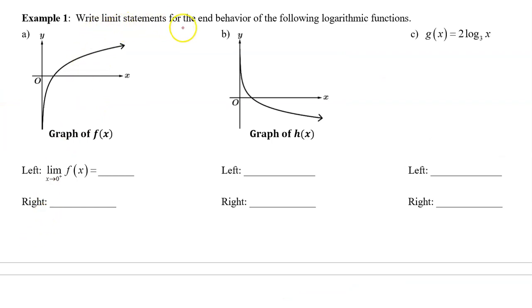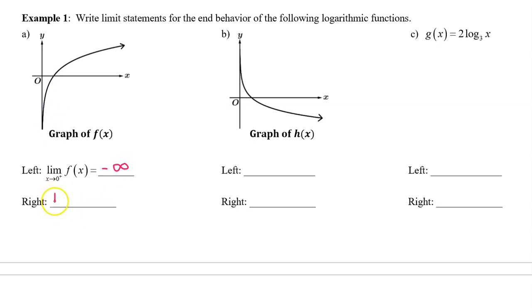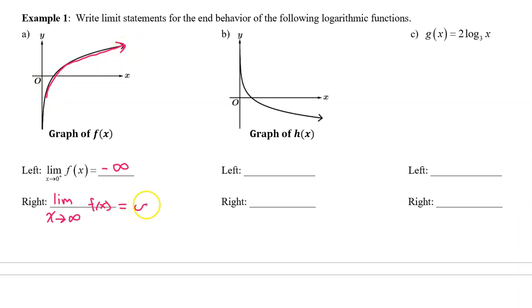Example 1: Write limit statements for the end behavior for the following logarithmic functions. Part A: For the left-end behavior, say the limit as x approaches zero from the right of f of x. As x approaches zero from the right, f of x approaches negative infinity. For the right-end behavior, begin the limit as x approaches positive infinity of f of x. As x approaches positive infinity, f of x also approaches positive infinity, so the limit equals positive infinity.